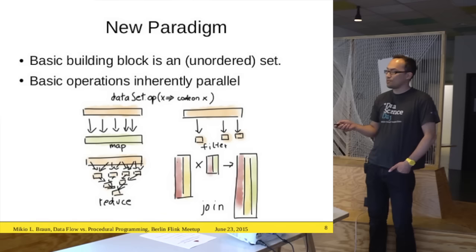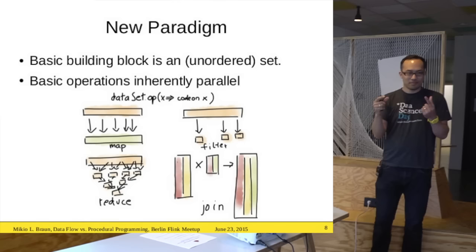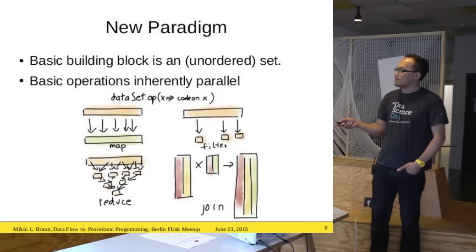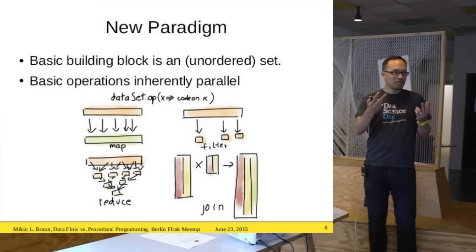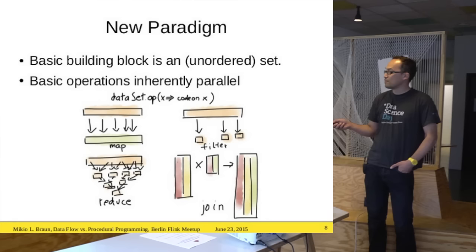Then there's the reduce idea. When you want to compute a sum, the problem was the global variable you keep updating. But the interesting thing about sum is that you can take sums of parts and combine them later — first add two elements, get new elements, break it down further — and that's something you can distribute. For operations where you always take two parts and compute something new, that's called a reduce operation, and people found that if you have this structure, you can parallelize it very easily.